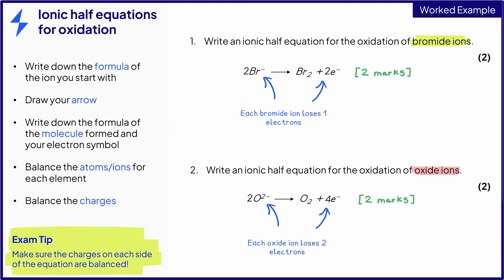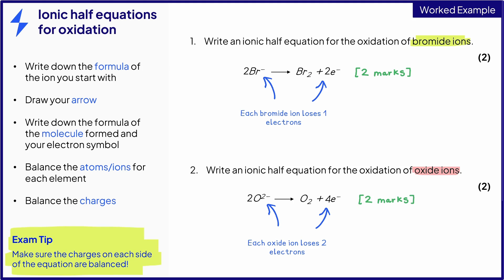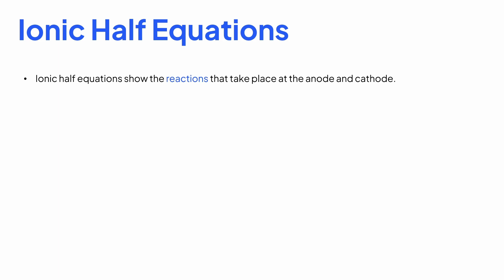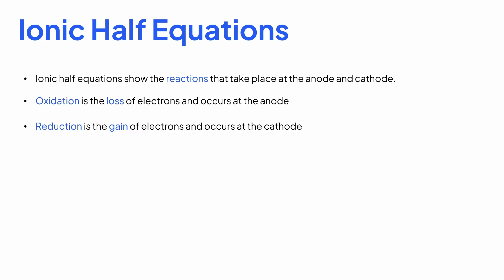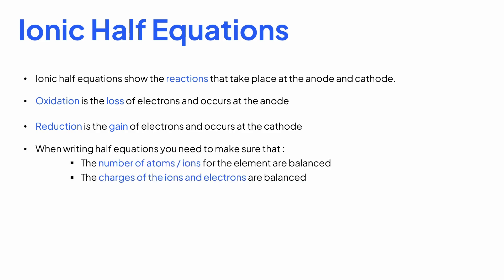To summarise: ionic half equations show the oxidation reaction taking place at the anode and the reduction reaction taking place at the cathode. Oxidation is the loss of electrons, and reduction is the gain of electrons, which can be memorised using the mnemonic OIL RIG. When writing an ionic half equation, make sure that the number of atoms and ions for each element is balanced, as well as the charges of the ions and the electrons.